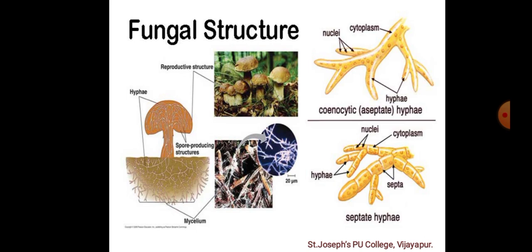Others have septate or cross walls in their hyphae. The cell walls of fungi are composed of chitin and polysaccharides.